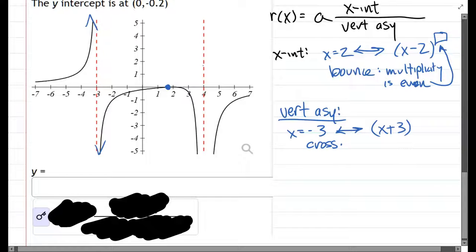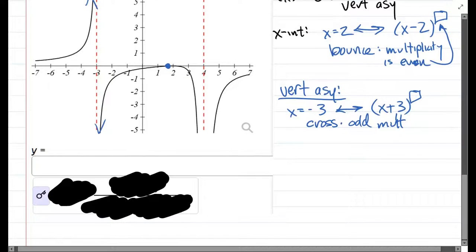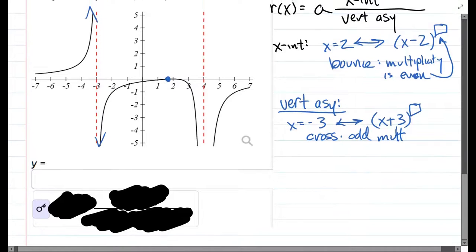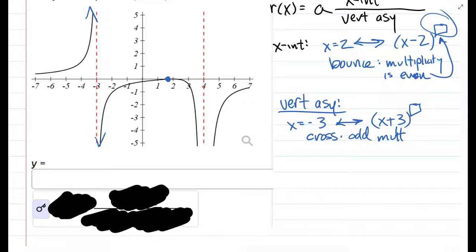Which means odd multiplicity. So whatever power we put in there needs to be odd. Most likely it's going to be a first power, it's possible it could be a third power. But you're usually going to use the smallest odd number. And for the other one you'd use the smallest even number. You don't use zero because zero is like not having it, so the smallest positive even number would be two.